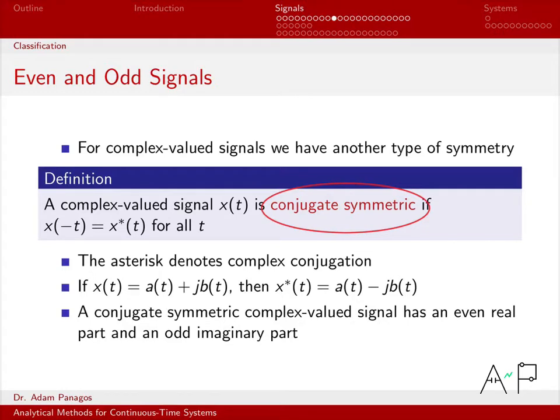So a complex valued signal could be conjugate symmetric or it could not be conjugate symmetric. If it's conjugate symmetric, then this holds for all time t. Basically, the time reversed version of the signal equals the conjugate of the original signal. So that's what this little star means. And conjugation just means change all the j's to minus j.